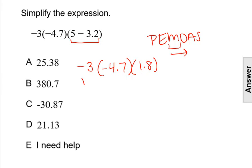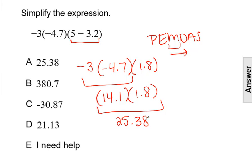We'll first do negative 3 times negative 4.7, which will give us 14.1. And then finally, we'll do the product of 14.1 times 1.8, which will give us 25.38, or answer choice A.